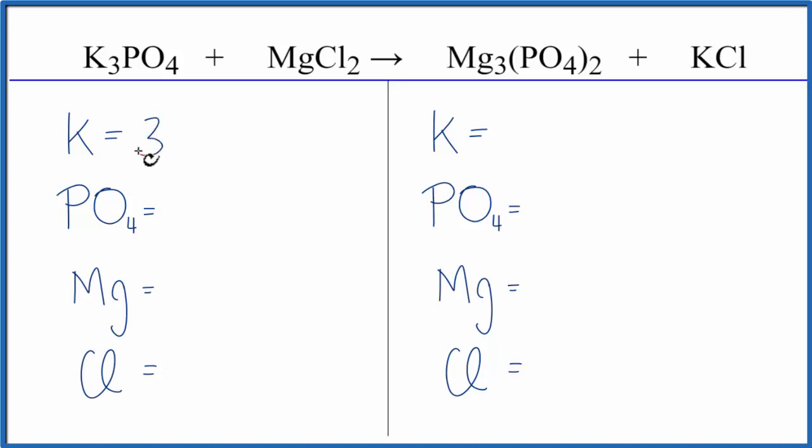We have three potassium atoms and then I'm going to count this polyatomic ion here, this phosphate ion, as just one thing. I can do that because I have one here and then I have two here. That'll make balancing a lot easier. So we have one phosphate ion, one Mg and two Cls. On the product side, one potassium, two of these phosphates, three Mg's and one Cl.